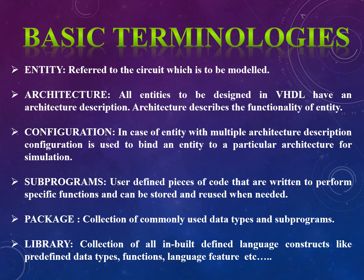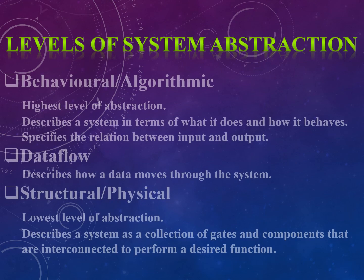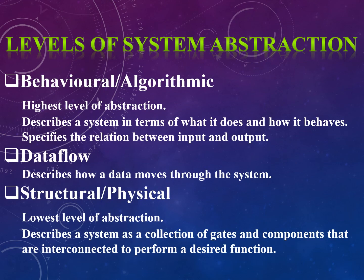Next are the levels of system abstraction in VHDL. There are mainly three levels: behavioral or algorithmic, data flow, and structural or physical. The first is the behavioral or algorithmic level, which is the highest level of abstraction. In this level, it describes a system in terms of what it does and how it behaves, and it specifies the relation between input and output. The second level is data flow, which describes how data moves through the system.